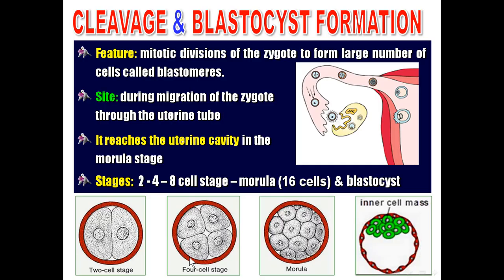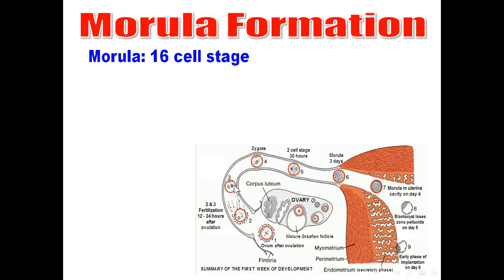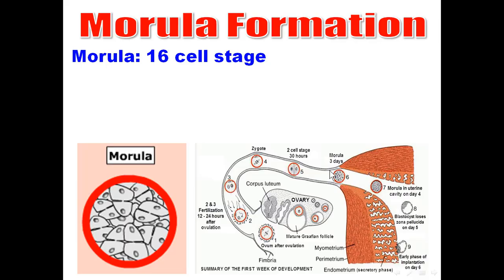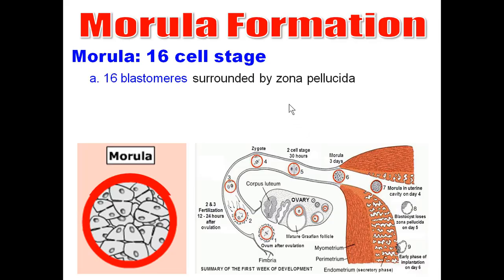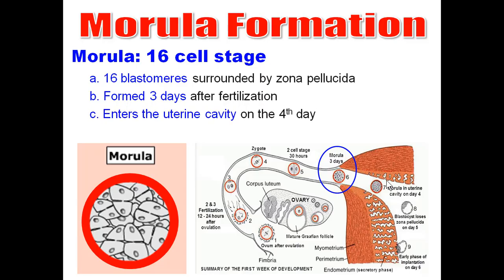Cool fluid accumulates inside the morula to form the blastocyst. The morula is the 16-cell stage, surrounded by zona pellucida. It is formed 3 days after fertilization, enters the uterine cavity on day 4, and once in the uterine cavity, fluid collects inside the morula to form the blastocyst.